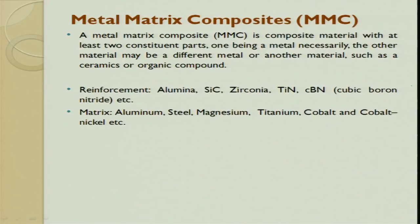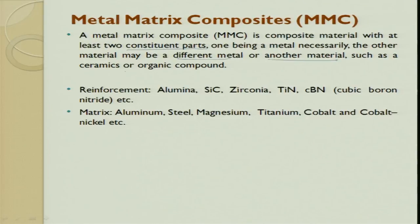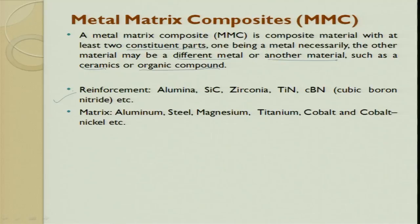A metal matrix composite is a composite material with at least two constituent parts — one being a metal, the other being a different metal or another material such as ceramic or an organic compound. Reinforcements can be alumina, zirconia, SiC, TiN, TiC, TiCN, and cubic boron nitride. Matrix materials include aluminum, steel, magnesium, titanium, cobalt, and cobalt-nickel-aluminum.